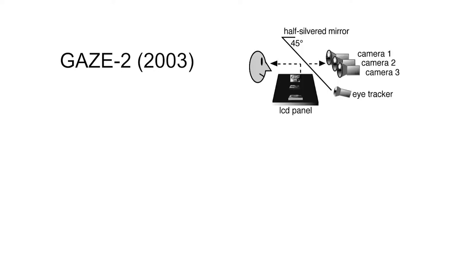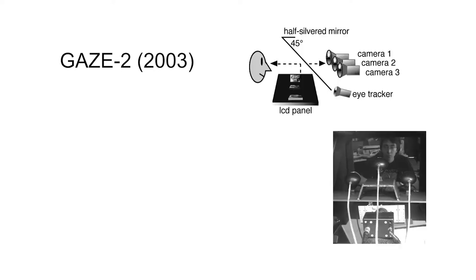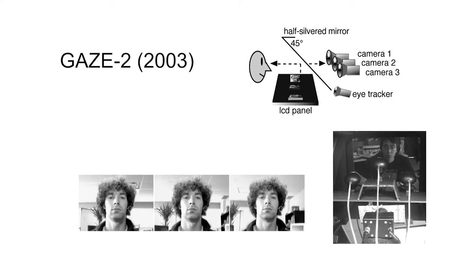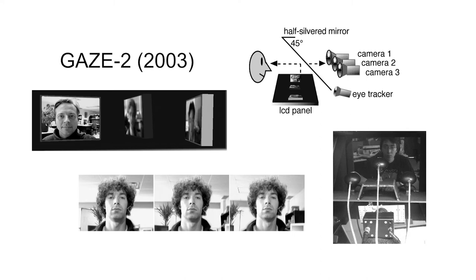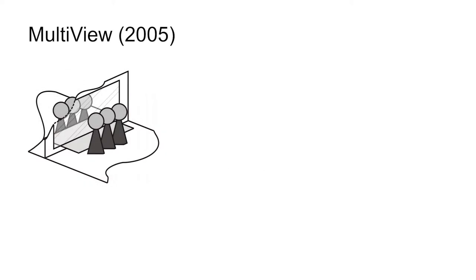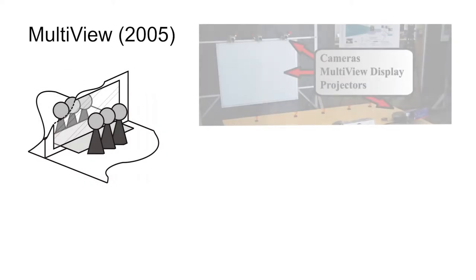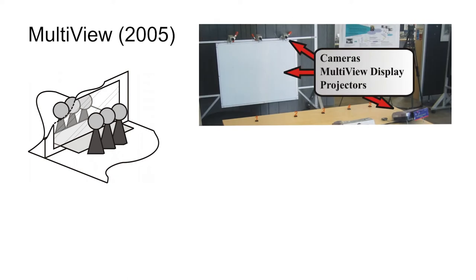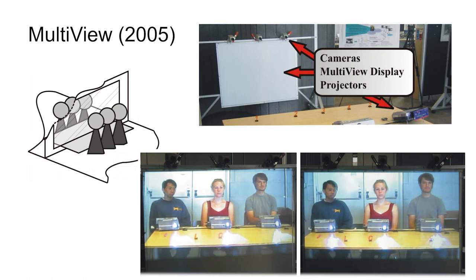Gaze2 utilizes an eye tracker with three cameras. The eye tracker is used for selecting a proper camera closest to where the user is looking. All the video images are placed horizontally so the video images turn left or right when the corresponding camera is chosen. Likewise, MultiView is a video conferencing system that supports cooperation between remote groups of people with three cameras, and allows multiple users to be co-located in one site by generating a personal view for each user even though they look upon the same projection surface.